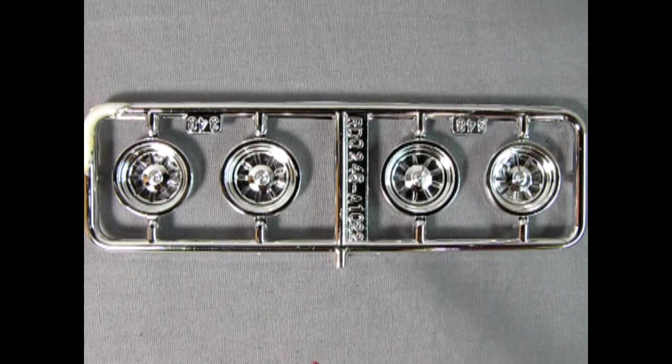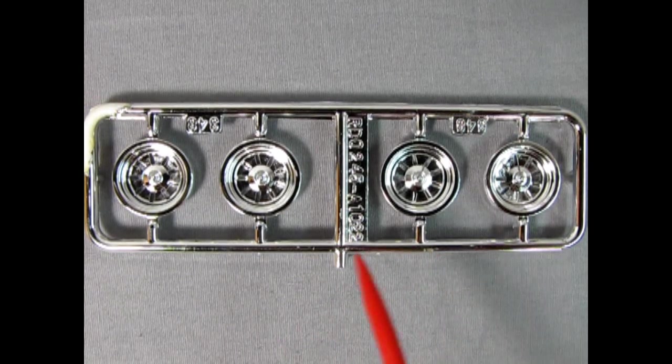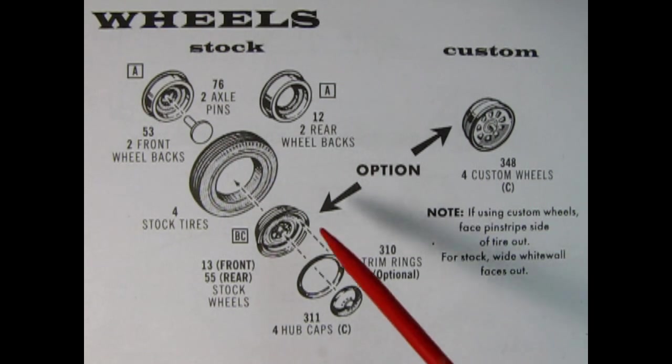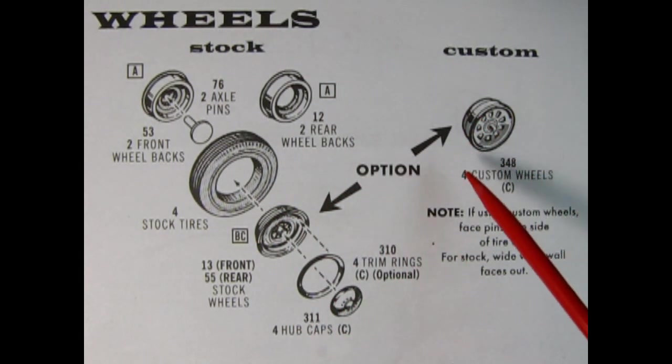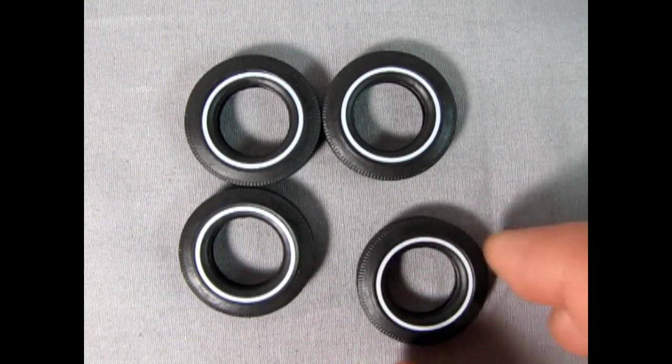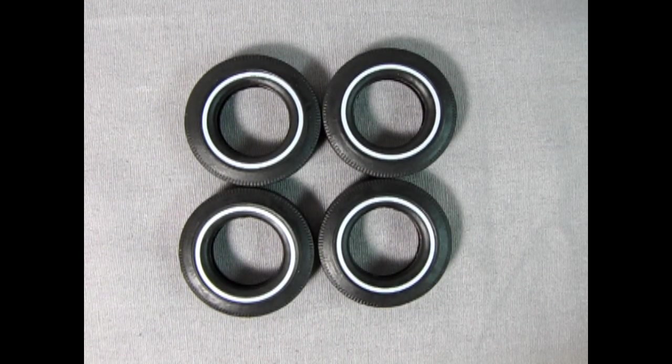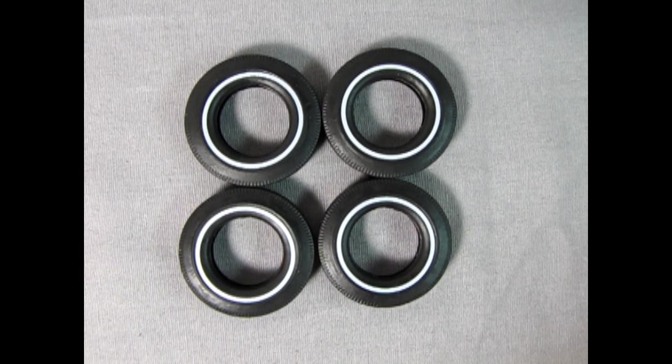Next up is the reactor combination designed for a 1966 show rod custom build. This configuration replaces the stock wheels with the unique reactor wheels giving your model a distinct and customized appearance. The white wall tires are reversed to reveal narrow white walls printed on the back adding a touch of 1966 flair and individuality to your build.